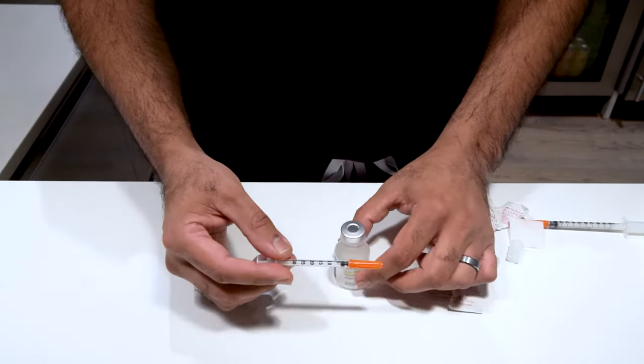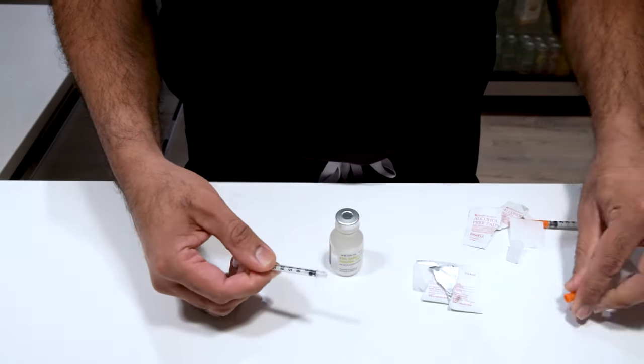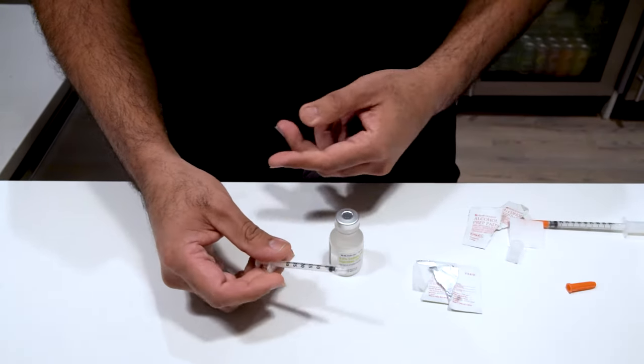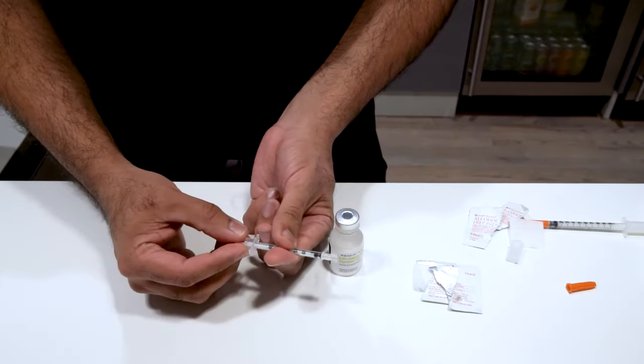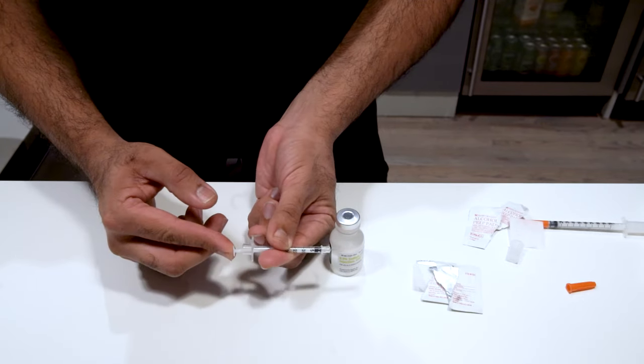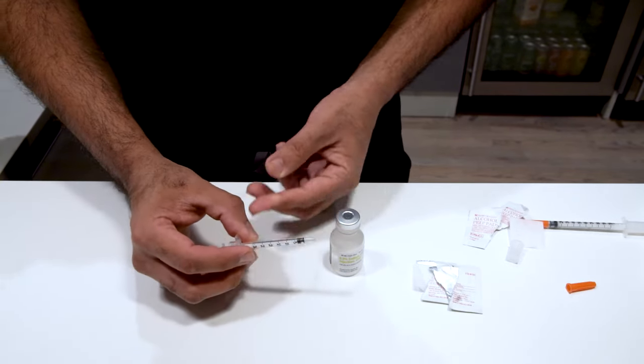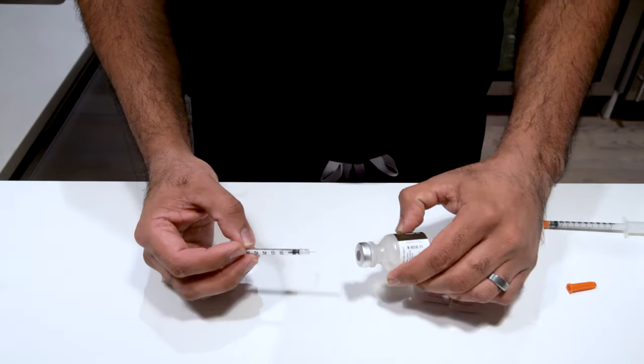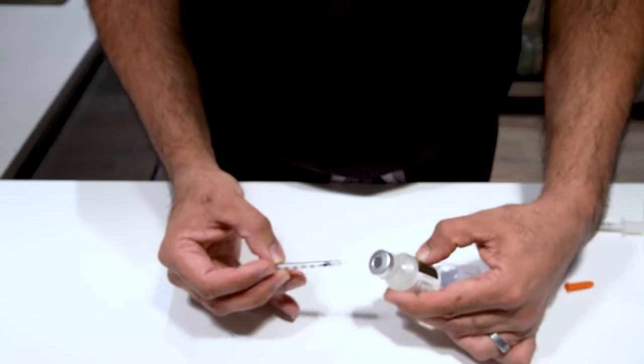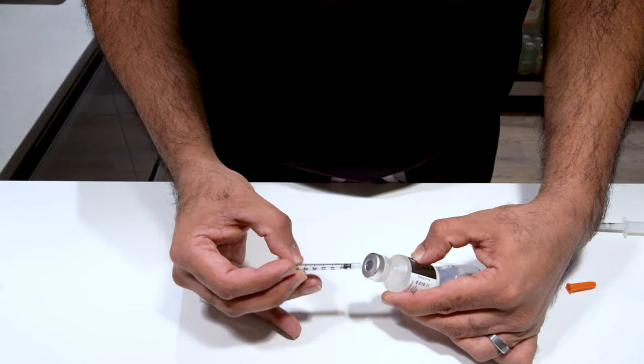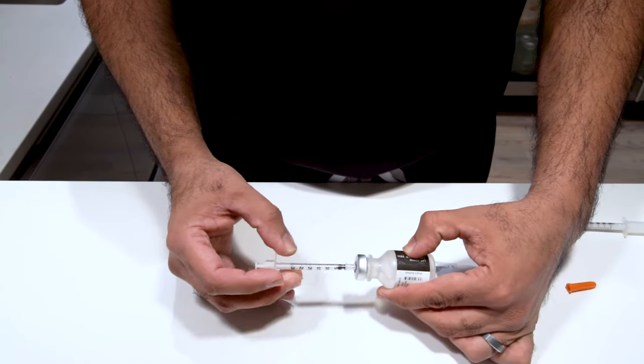Next, we're going to take our syringe, take off the needle cap. Be very careful from this point forward. Making sure that our plunger is pushed all the way to the end, remember, just going to push it all the way through. The easiest way to get the medication out is to hold it sideways, aim right for the center with your needle, and push it all the way in.